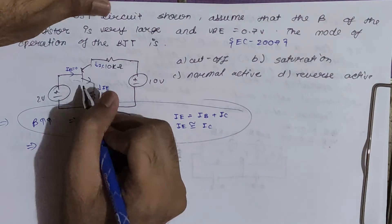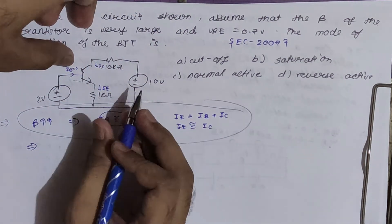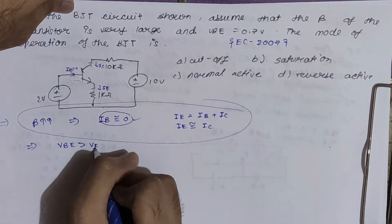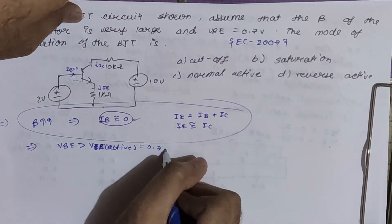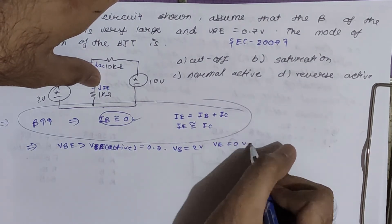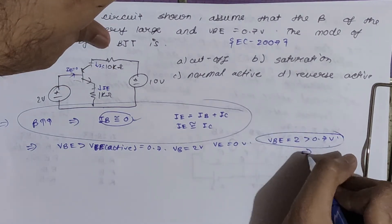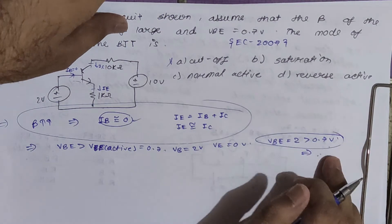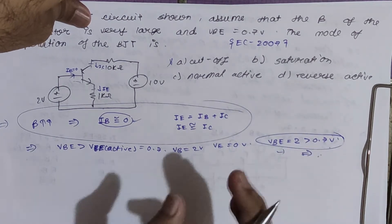The very first step is to check whether the transistor is ON or OFF. Remove the transistor from all terminals and check if VBE is greater than VBE(active) = 0.7V. With the transistor removed, VBE = 2V and VE = 0V, so VBE = 2V > 0.7V. The transistor is ON, so cutoff region can be eliminated.